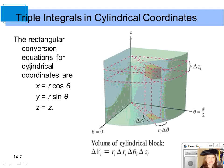Recall back in Chapter 11 when we talked about cylindrical coordinates. We can do triple integrals using cylindrical coordinates, and the conversion equations we use to go from rectangular to cylindrical are: x equals r cosine theta, y equals r sine theta, and z equals z. Also, x squared plus y squared equals r squared.